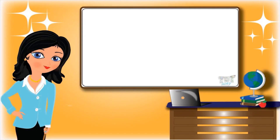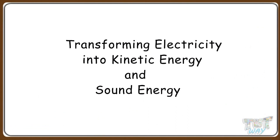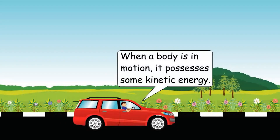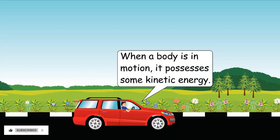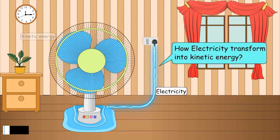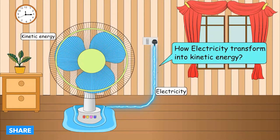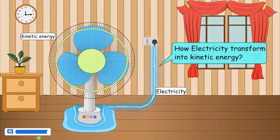Hi friends! Today we will learn about transforming electricity into kinetic energy and sound energy. So let's start. We know when a body is in motion, it possesses some kinetic energy. Let's first discuss how electricity is transformed into kinetic energy, as in how electricity can be used to produce motion in an object.